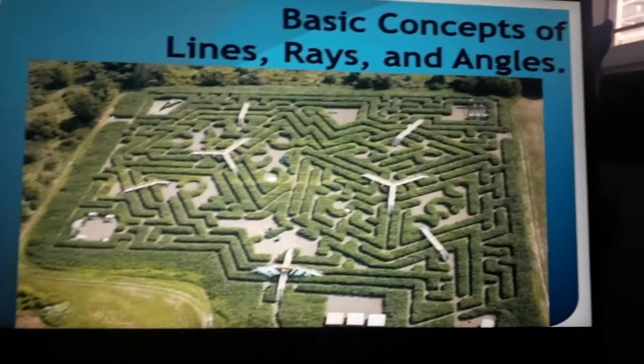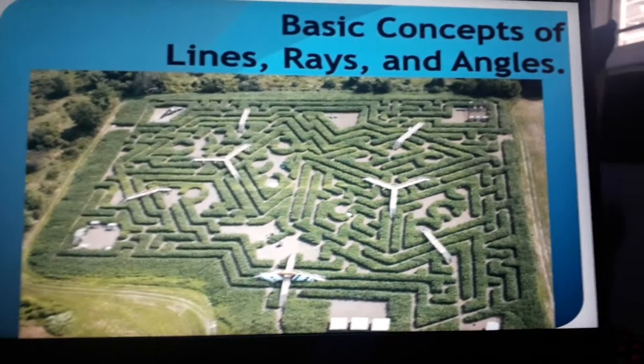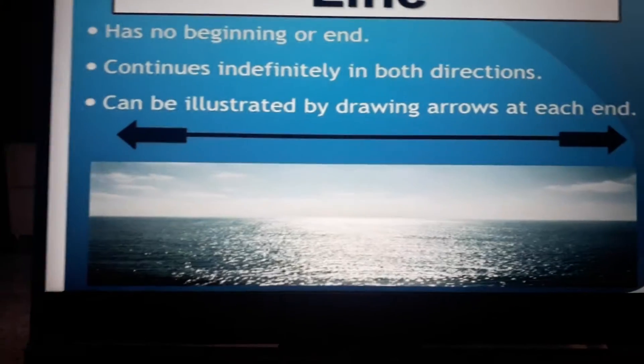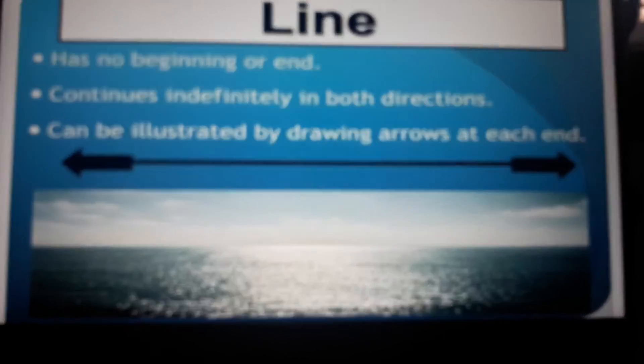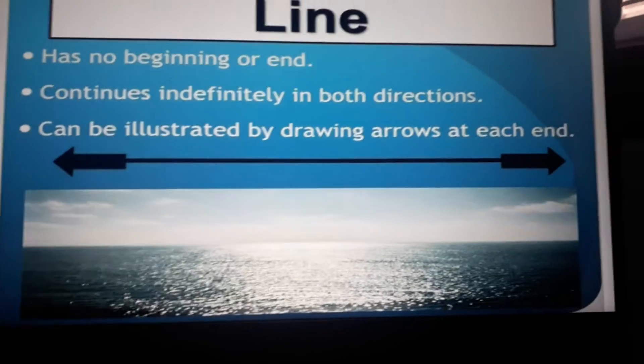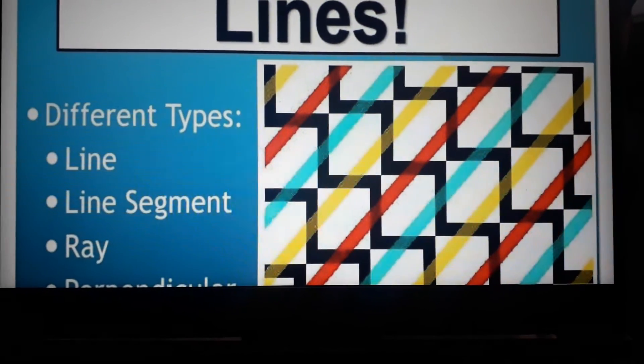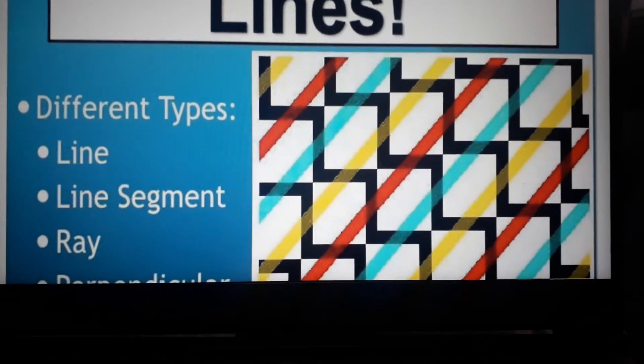Basic concepts of lines, rays, and angles. A line has no beginning point or end, continues indefinitely in both directions, and can be illustrated by drawing arrows at each end. We have different types of lines: line, line segment, and ray.